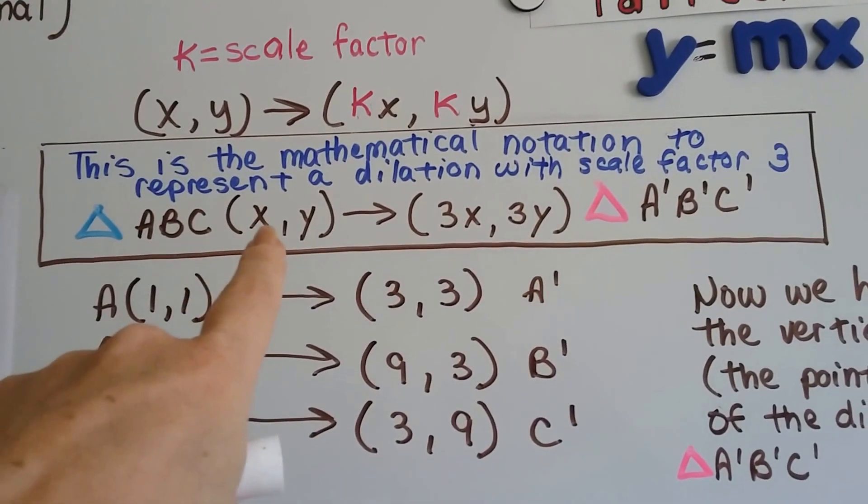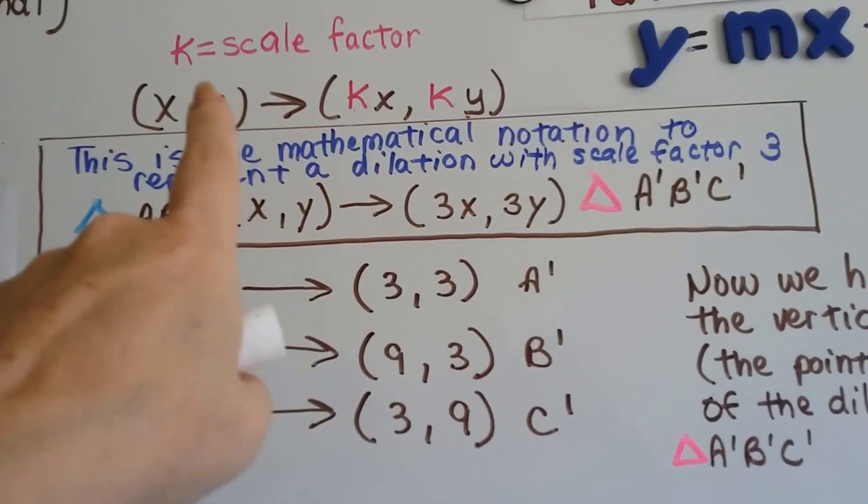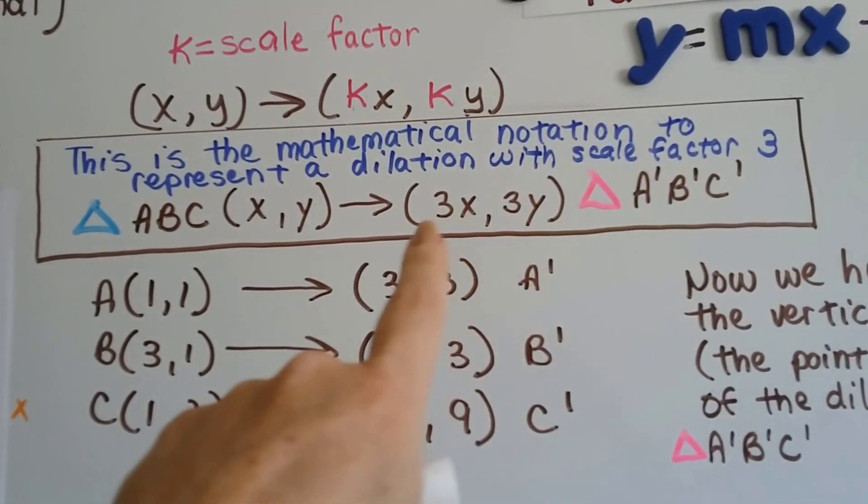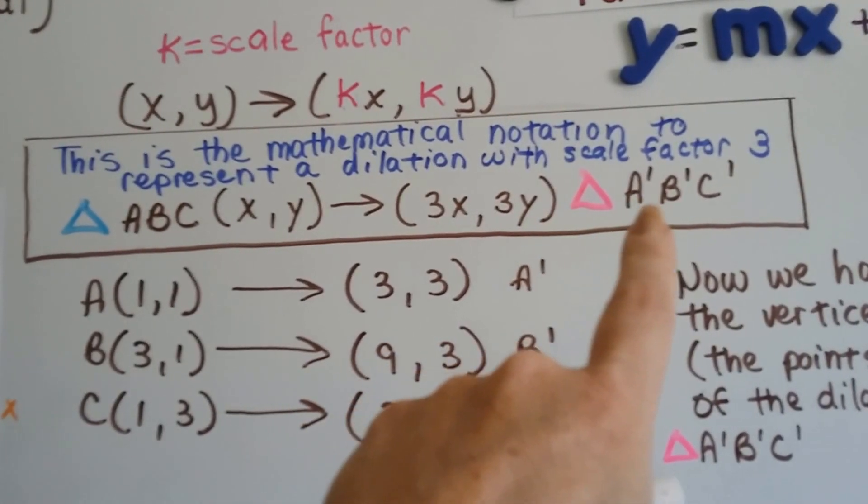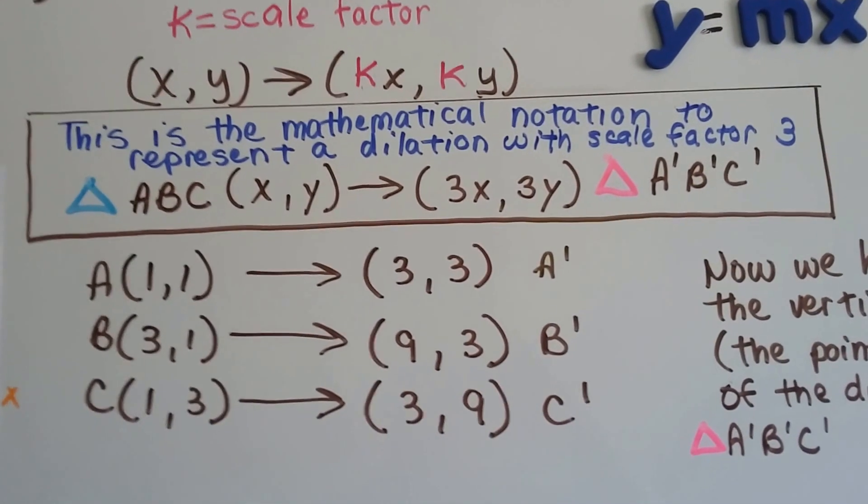Triangle ABC would be the (x,y) with the arrow, just like up here, and because the scale factor is 3, we would write 3x, 3y, and that would be A prime, B prime, C prime for the new triangle.